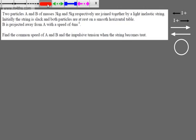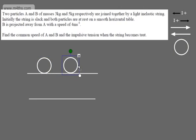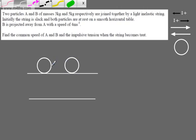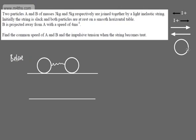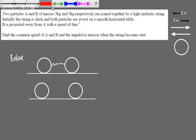Let's model this up. We have a string that is currently slack, with particles A and B. We set up a before shot and an after shot. In the before shot the string is slack; in the after shot the string is taut, and both particles move with the same velocity.